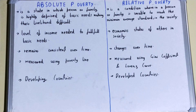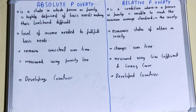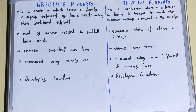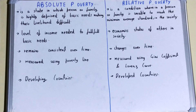Hello friends, in this video I will be helping with the difference between absolute poverty and relative poverty. Our general idea is: absolute poverty is when the minimum needs required to be fulfilled are not fulfilled. In the case of relative poverty, it is basically the condition of a family when their condition doesn't match the minimum average standard of the society.